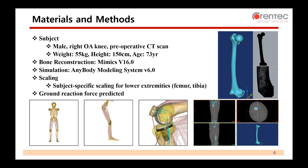Now I will explain the materials and methods of this study. Regarding the subject, a male with OA underwent a CT scan. 3D surface geometry of the femur and tibia were reconstructed using Mimics version 16, and these reconstructed 3D models were exported to STL files. Musculoskeletal simulation was performed by the AnyBody Modeling System. Subject-specific scaling of the AnyBody human model was done for lower extremity segments such as the femur and tibia, and ground reaction forces were predicted as there were no experimental measurements.